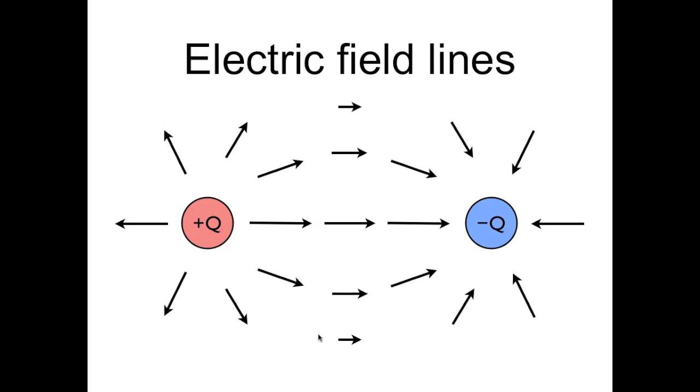To draw in electric field lines, let's first consider the electric field just below the positive charge. It points almost straight down. Now let's consider the electric field at the end of this vector.